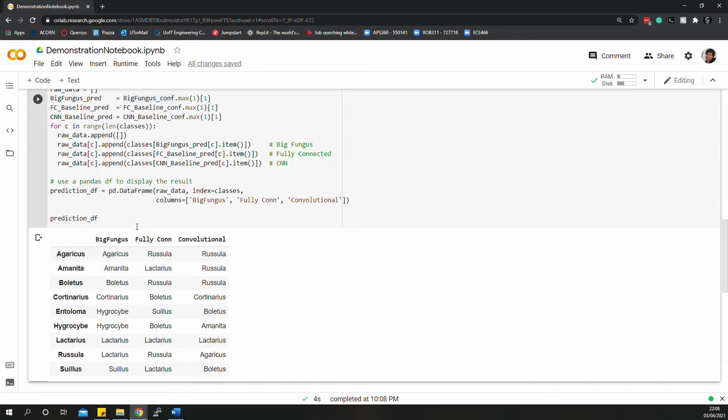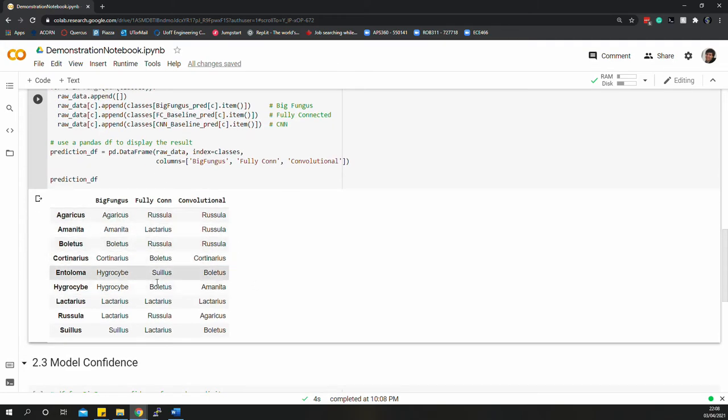As you can see from these predictions, our fully connected and convolutional baseline models both make guesses purely on the most common classes. Meanwhile, our BigFungus model consistently makes good predictions, with the exception of one or two mistakes.